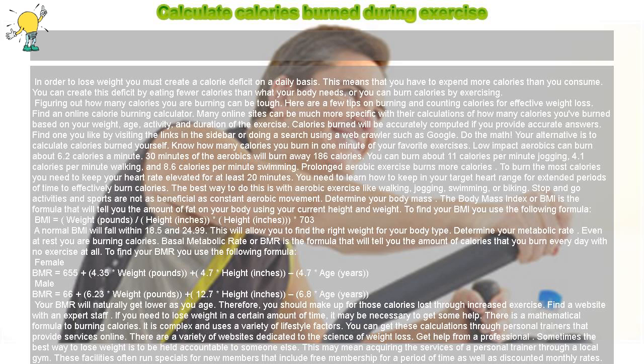The Body Mass Index, or BMI, is the formula that will tell you the amount of fat on your body using your current height and weight. To find your BMI, use the following formula: BMI equals weight (pounds) divided by height (inches) times height (inches), multiplied by 703. A normal BMI will fall within 18.5 and 24.99.